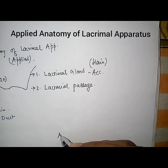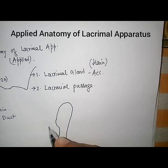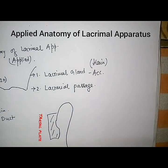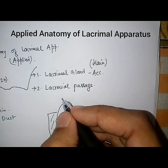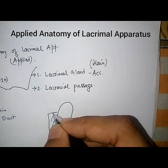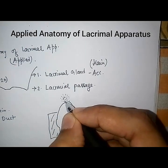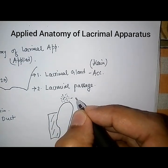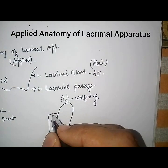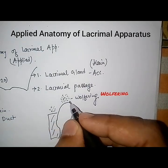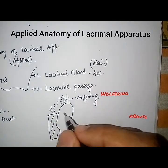Considering the anatomy of the palpebral conjunctiva: this is the palpebral conjunctiva, fornix, and bulbar conjunctiva, and this is the tarsal plate. Accessory lacrimal glands — the glands of Wolfring — are situated between the superior border of the tarsal plate and the superior fornix. Glands of Krause are also present along with them.